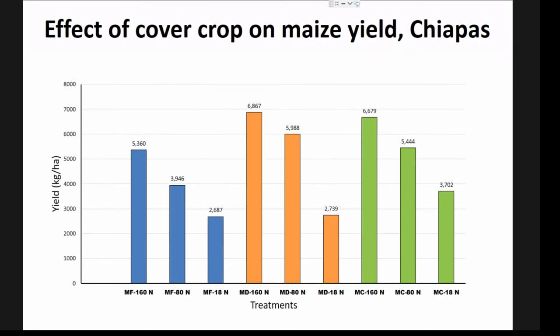We're also looking at other ways to improve fertilization. In Chiapas, we had a trial with three different cover crops — common beans, dolichos, and canavalia — at three different levels of nitrogen. We evaluated the effect of cover crops for crop diversification on yield, and the results are quite promising, showing we could substantially reduce fertilization if we include cover crops in Chiapas.